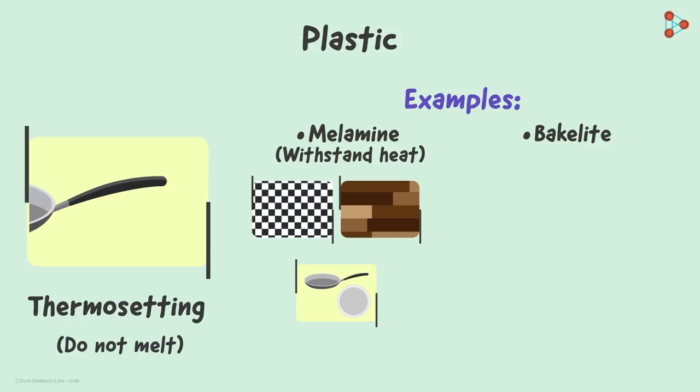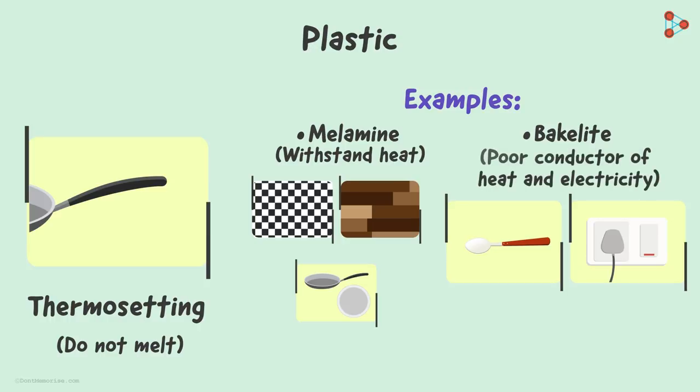Bakelite on the other hand is used in making handles of kitchen utensils and switches as it's a poor conductor of heat and electricity. So this was about thermosetting plastics.